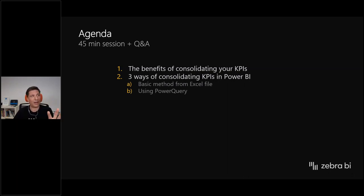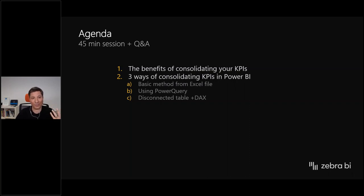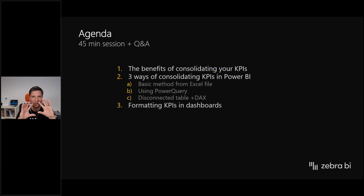Then we'll move on to Power Query, which is a great tool for massaging and transforming your data, and will definitely help achieve some nice results here. The third method is by using a disconnected table and DAX — we'll do some switch statements. All three methods have pros and cons. The third one is the most powerful, and you'll see you can do quite a lot. Once you're able to consolidate your KPIs in one spot, the last piece is how to format the different types of KPIs in your dashboards.